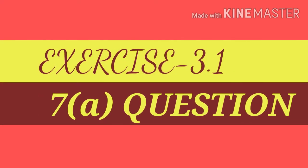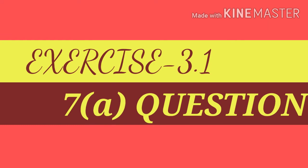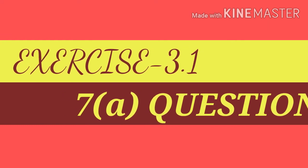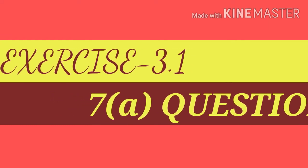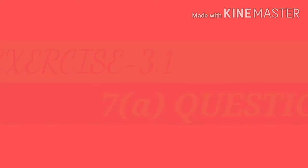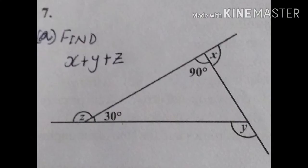Today we'll do question number 7a of Exercise 3.1. We are asked to find x plus y plus z, where x, y, and z are the exterior angles of a triangle, and 30 and 90 are the interior angles. We need to find the sum of these three exterior angles.